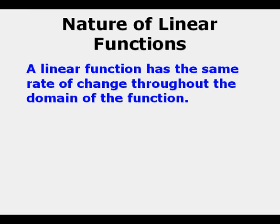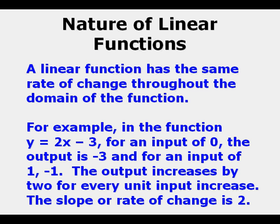A linear function has the same rate of change throughout the domain of the function. For example, the function y equals 2x minus 3 for an input of 0, output is negative 3. For an input of 1, it's negative 1. The output increases by 2 for every unit input increase. The slope or rate of change is 2.